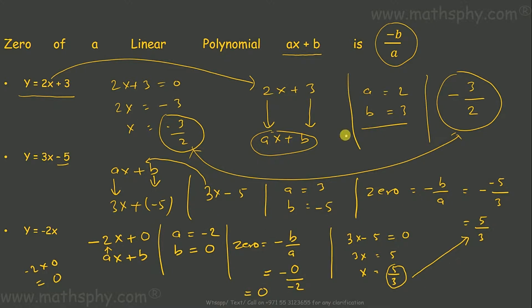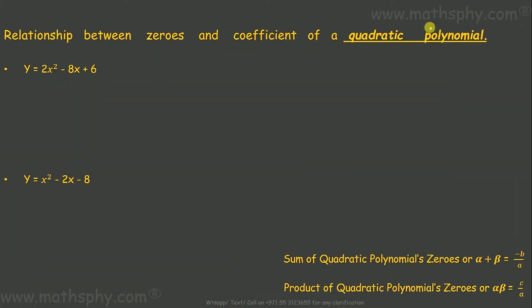So that was the relationship between the zero of a linear polynomial and its coefficients. The zero of a linear polynomial ax plus b is equal to negative b over a. Now let's move into quadratic polynomials. Quadratic polynomials are in the format of ax squared plus bx plus c, where a, b, c are all real numbers and a is not equal to zero.